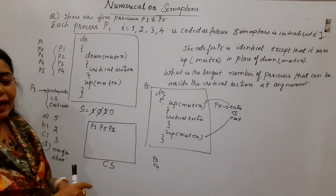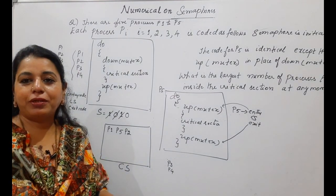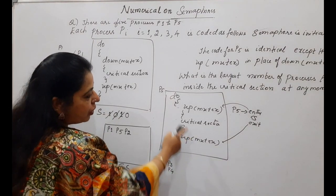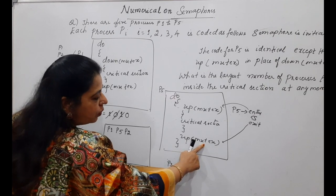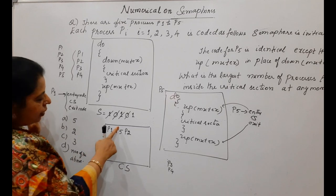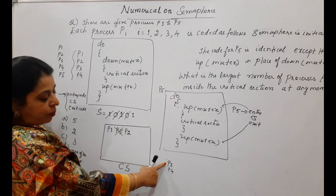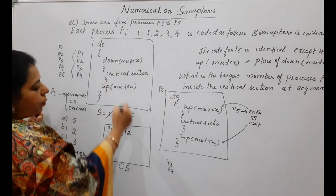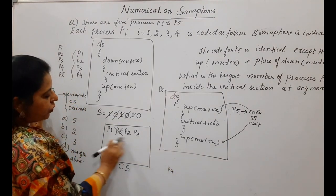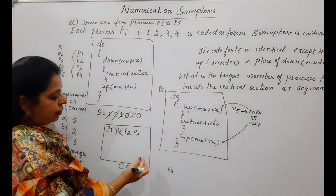This question is slightly tricky. You need to apply a trick to make the maximum number of processes enter the critical section. The trick is: make P5 come out from the critical section. For P5 to exit, it has to perform the up operation on mutex — its exit code says do the up operation on mutex. So P5 performs up on mutex, the semaphore value becomes 1, and P5 comes out. As soon as S becomes 1, P3 which was in the blocked state — its while loop condition becomes false — it performs the down operation on mutex and enters the critical section.